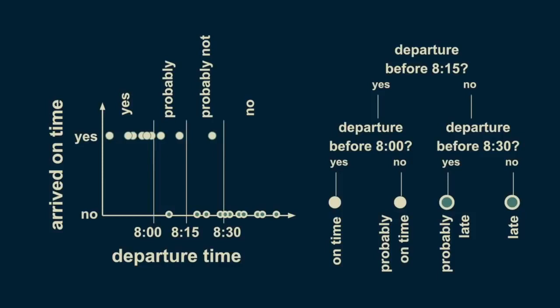This example has a single predictor variable and a categorical target variable. The predictor variable is our departure time, and our target variable is our punctuality — whether or not we're late. Because it has only two distinct values, it's categorical. Decision trees with categorical targets are also called classification trees.